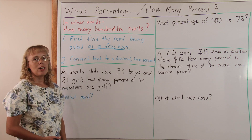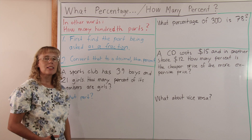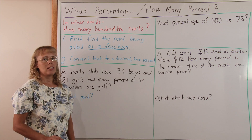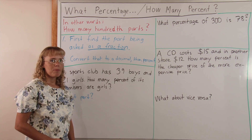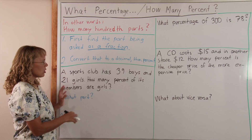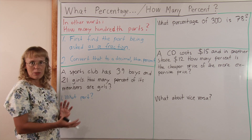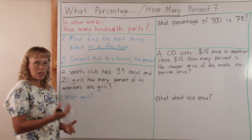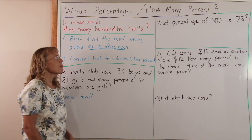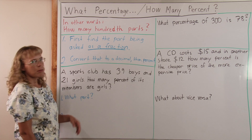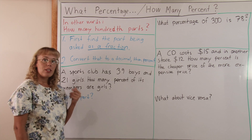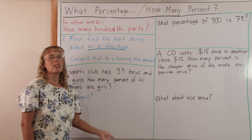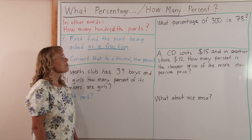We first find the part that it is asking as a fraction, without writing it as a percent, because in all these questions there's always going to be a fraction. It's always going to ask for certain parts as a fraction, and then after we have our fraction, we convert that to a decimal and percent, or maybe directly to percent.